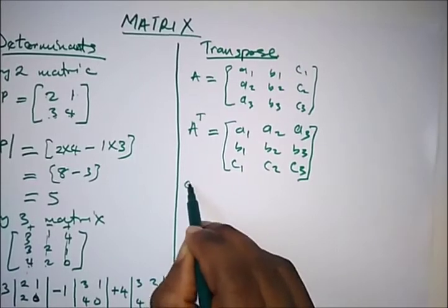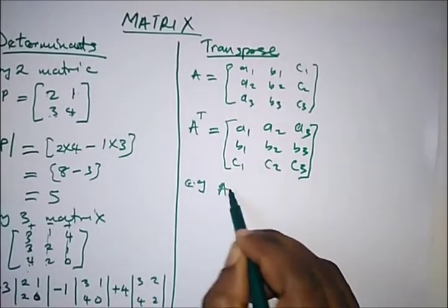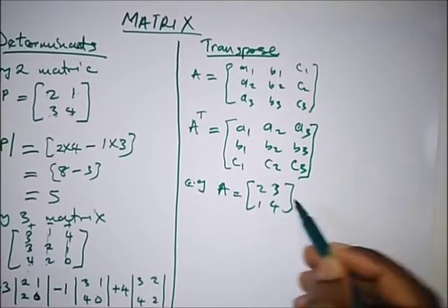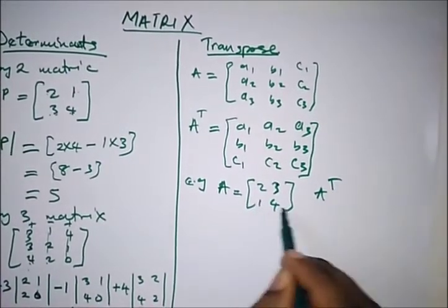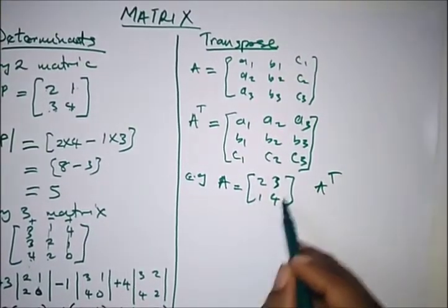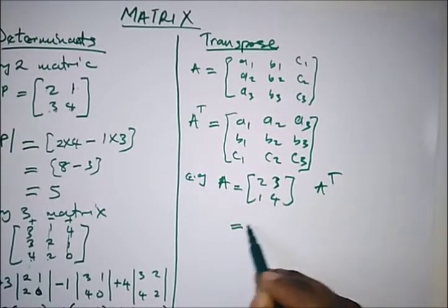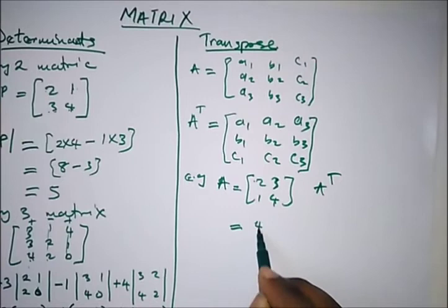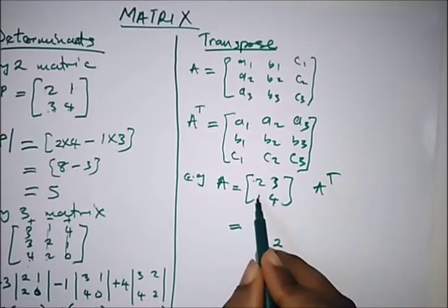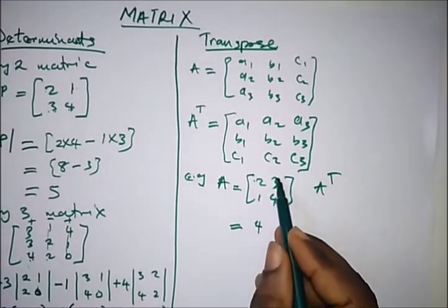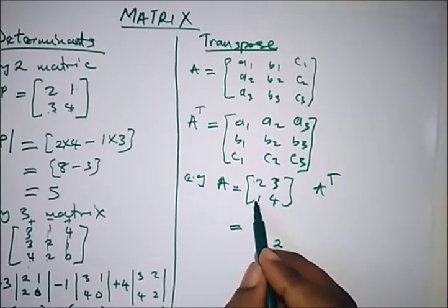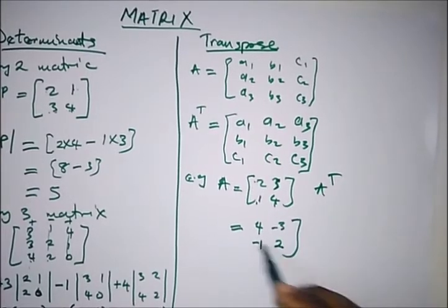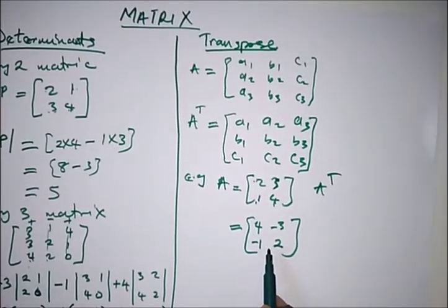For a 2 by 2 matrix, for example A = [2, 3; 1, 4], to find A^T (the transpose), we interchange the principal diagonal — bring 4 to the top-left and 2 to the bottom-right — and multiply a minus sign to the elements on the ordinary diagonal. So we get A^T = [4, −3; −1, 2]. This is how we easily find the transpose of a 2 by 2 matrix.